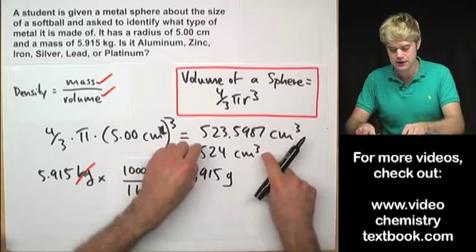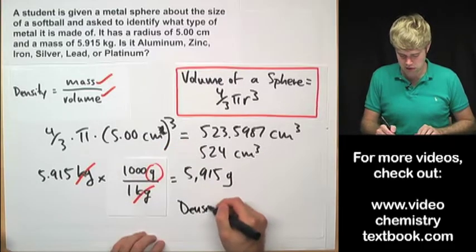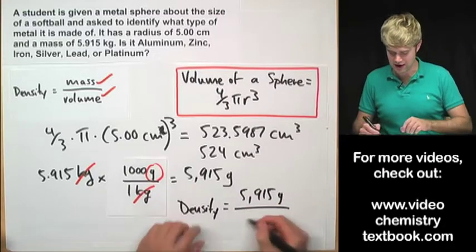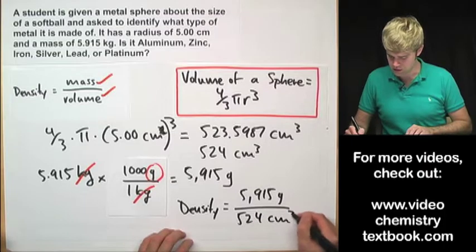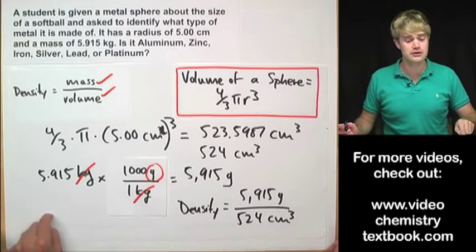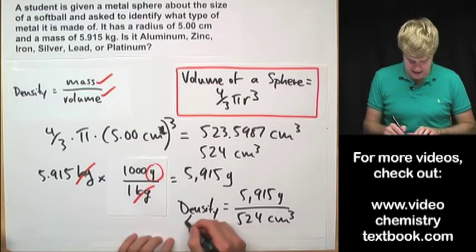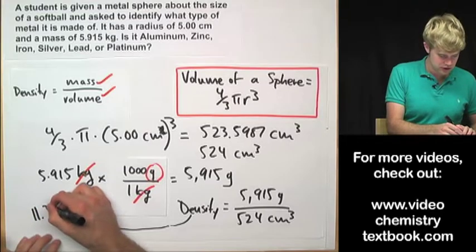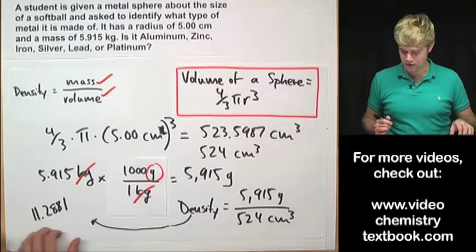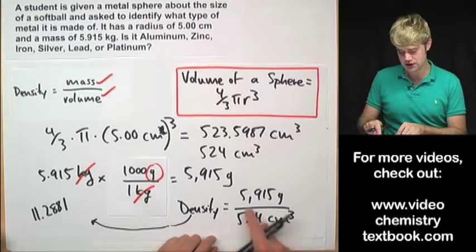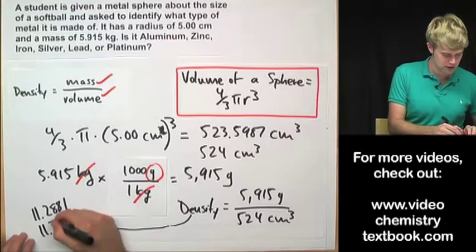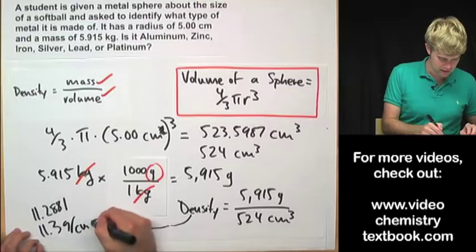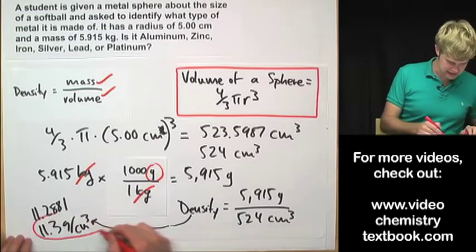There's the mass, there's the volume. So now to find the density I've got to take the mass 5,915 grams and divide it by the volume 424 cubic centimeters. I'm going to have to move over here to put the answer and when I do that the density that I'm going to get is 11.2881, round this to three significant figures because I have three sig figs here and four sig figs here so I'm going to round this to 11.3. What are the units? Grams over centimeters cubed. So that is the density.